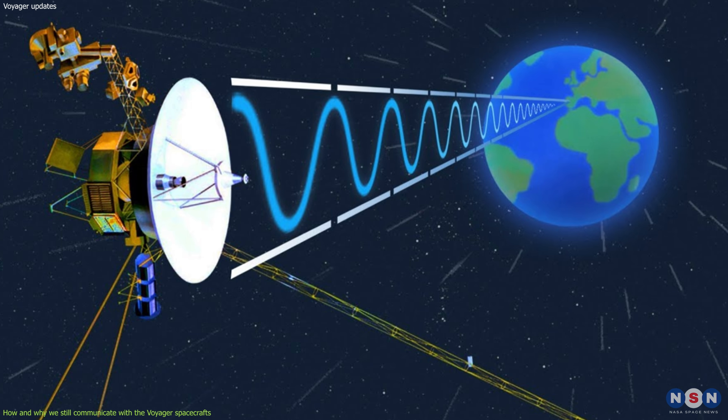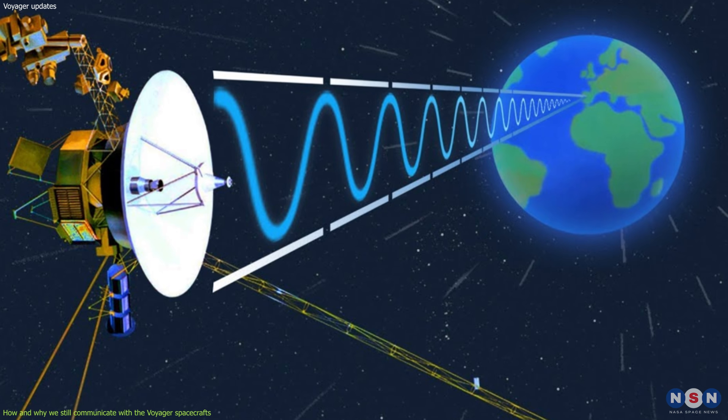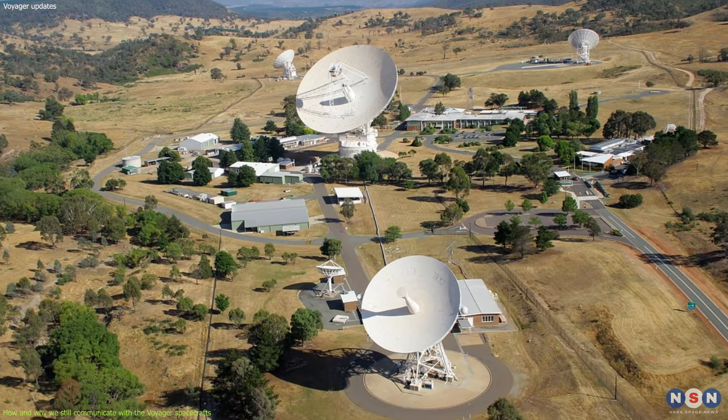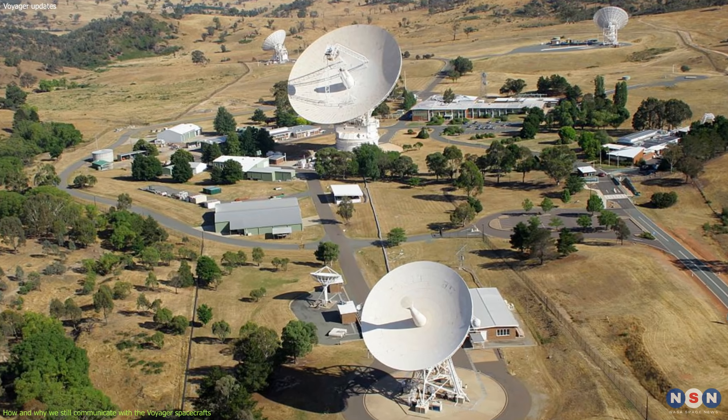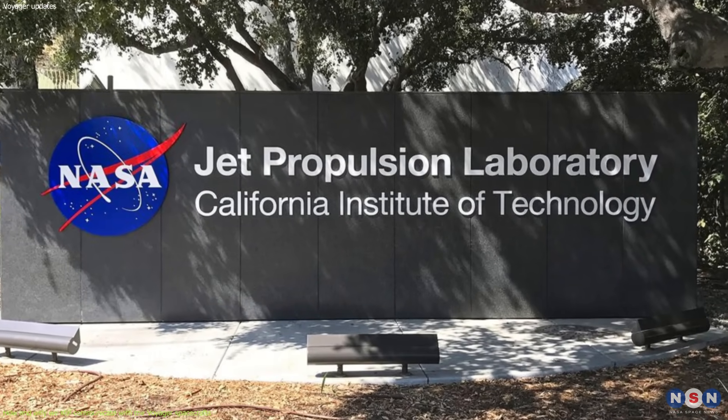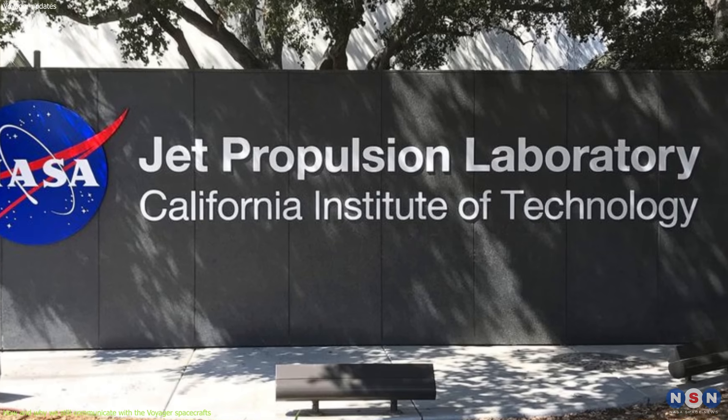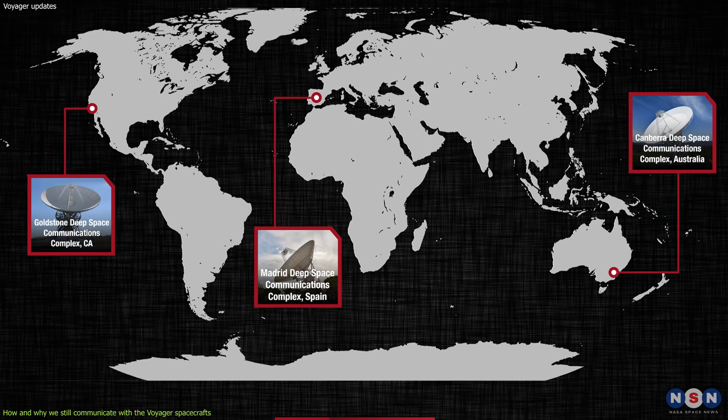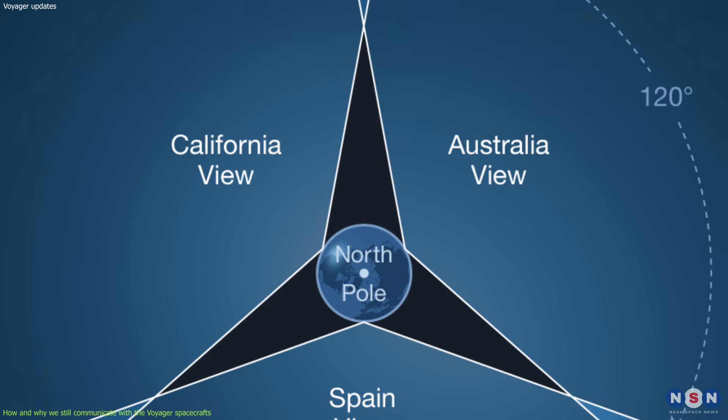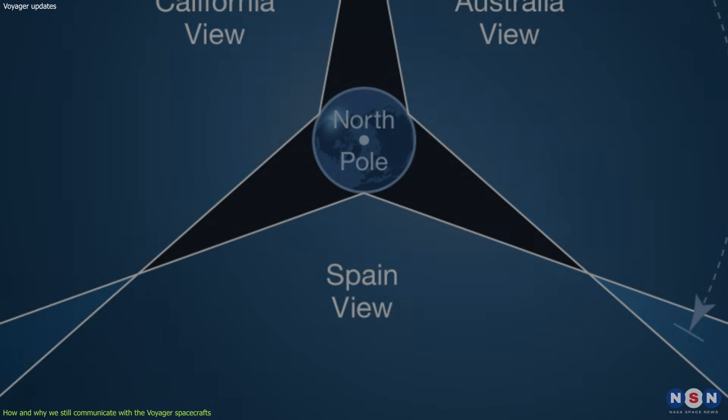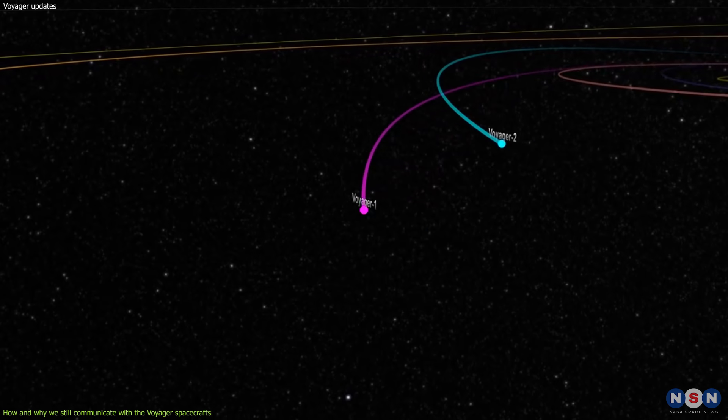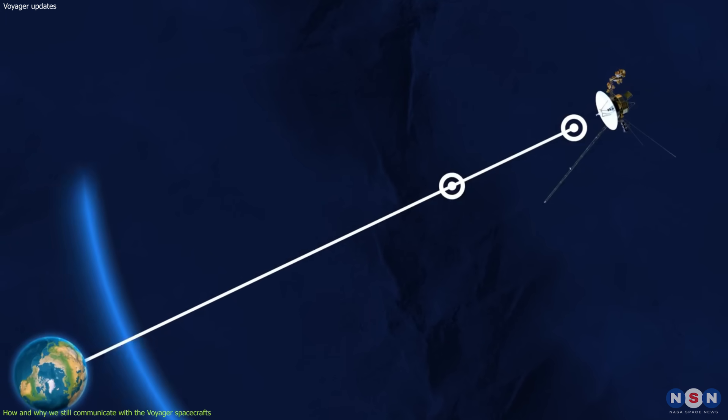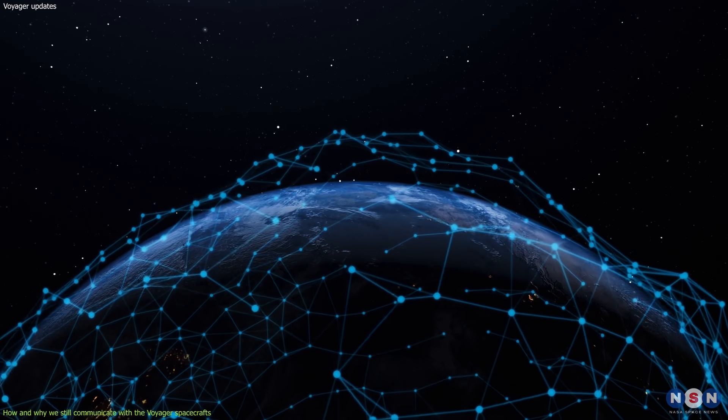But how do we communicate with them? We use a network of giant radio dishes called the Deep Space Network, or DSN, which is operated by NASA's Jet Propulsion Laboratory. The DSN has three stations located in California, Spain, and Australia, which cover different regions of the sky. It tracks the position of the Voyager spacecrafts and sends commands to them at specific times. It also receives data from them and processes it for analysis.